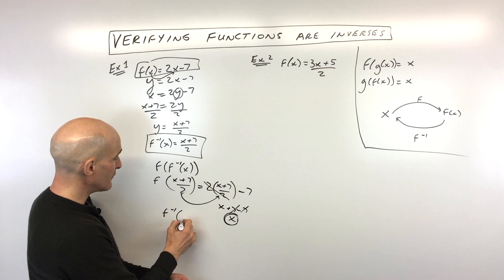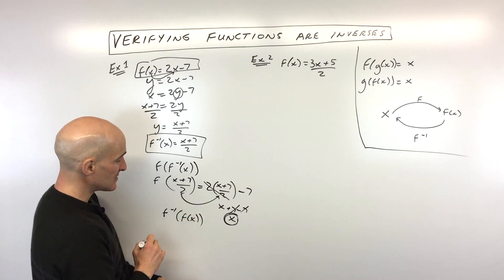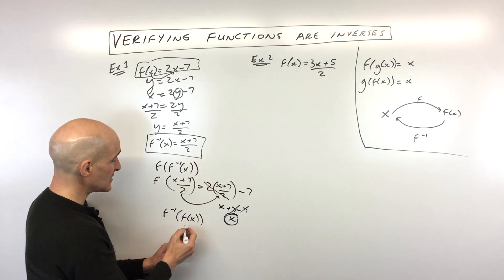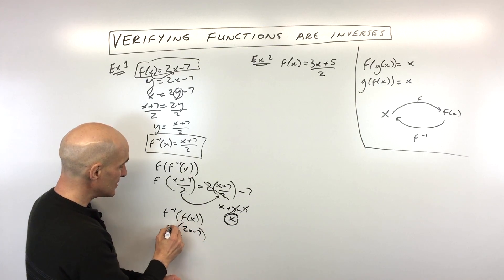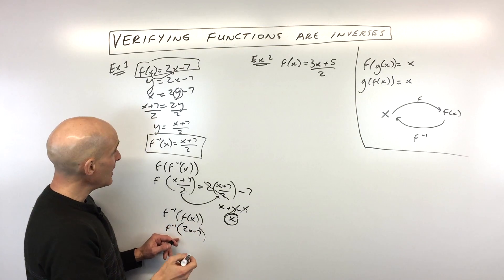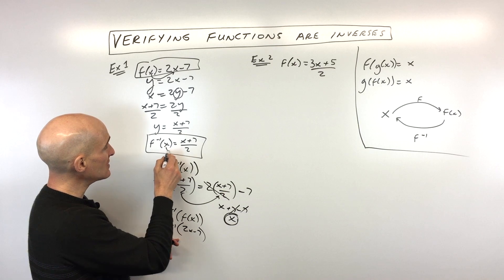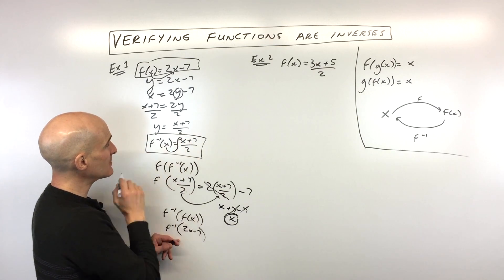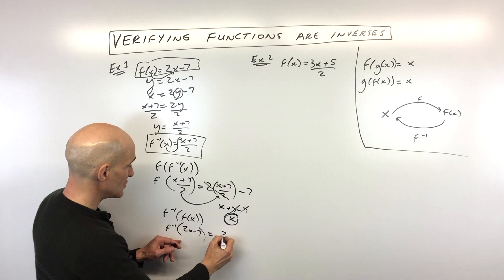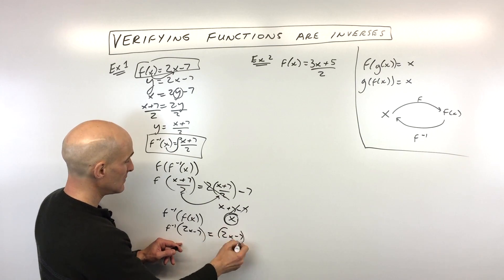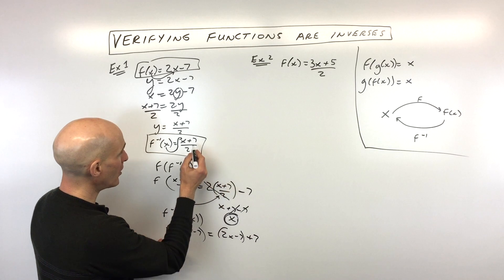Now let's do F inverse F of X. So now we're going to take our F of X function, two X minus seven, we're going to put it into our F inverse function. And that's this one here. So whatever's in the parentheses, that's going to go in place of X on the right. So we've got two X minus seven, I put that in place of X there, plus seven more, all divided by two.